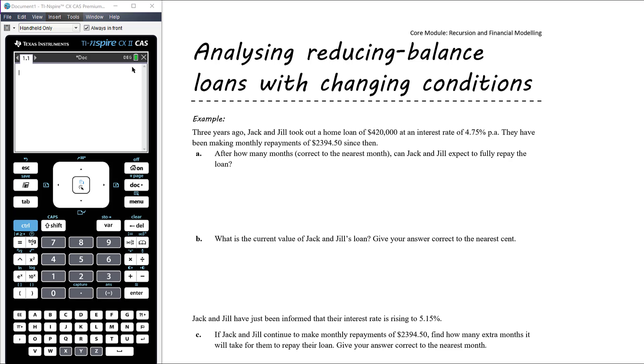Okay, so the example is that three years ago Jack and Jill took out a home loan of $420,000 at an interest rate of 4.75% per annum. They have been making monthly repayments of $2,394.50 since then. After how many months, so part A, after how many months correct to the nearest month can Jack and Jill expect to fully repay the loan?